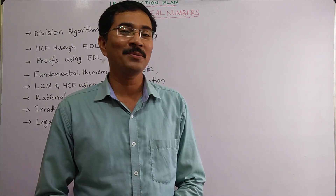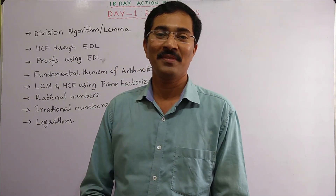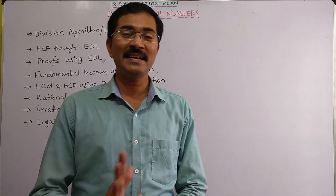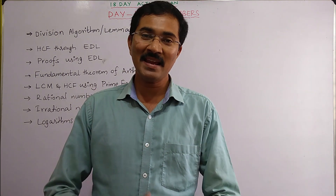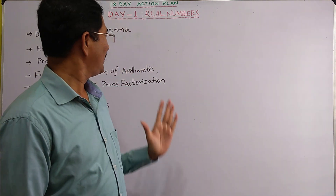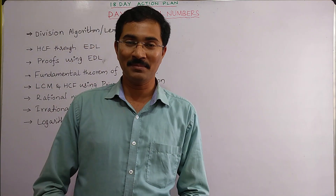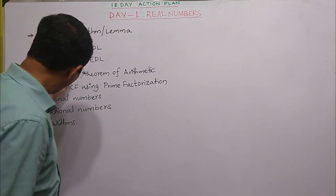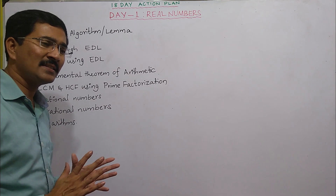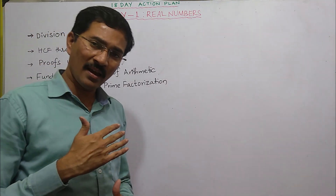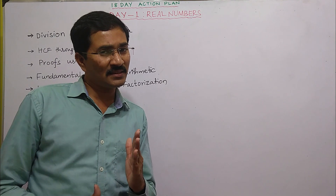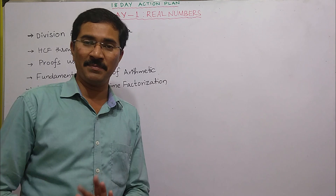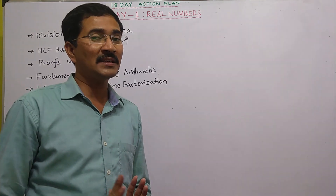Hi, hello, welcome to Math at a Go. Here we are today on the first day of our 18-day action plan. We will deal with the first chapter, Real Numbers. Because this chapter involves so many topics and there is a need for explaining a little better, we wish to take three sessions of this chapter, each session lasting about 15 to 20 minutes.